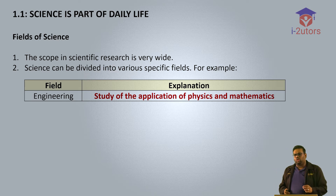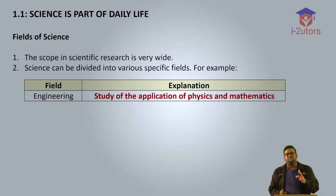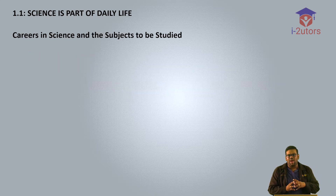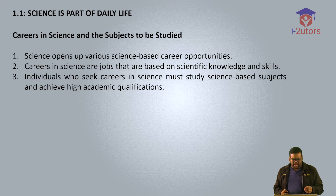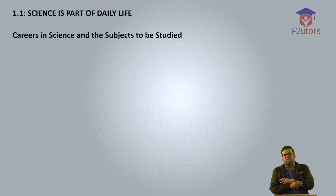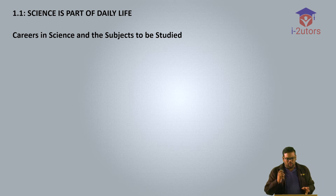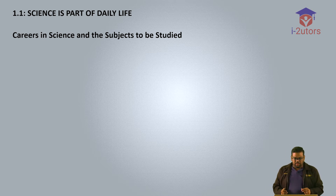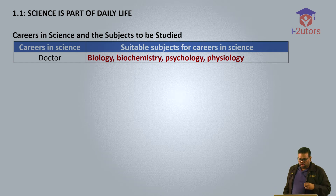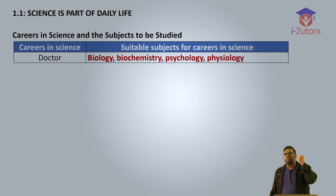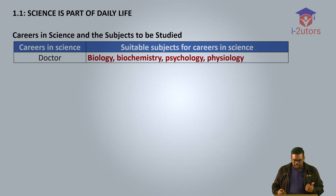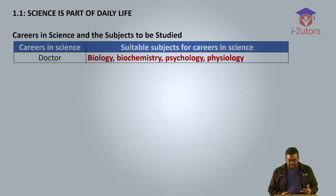Many students also ask: where can I branch out in a science field? Science is basically open — you can work almost everywhere. Looking at careers in science: the first one is doctor. The most suitable subjects to study for doctor are biology, biochemistry, psychology and physiology. The second career is engineering, which requires physics, mathematics and computer programming.